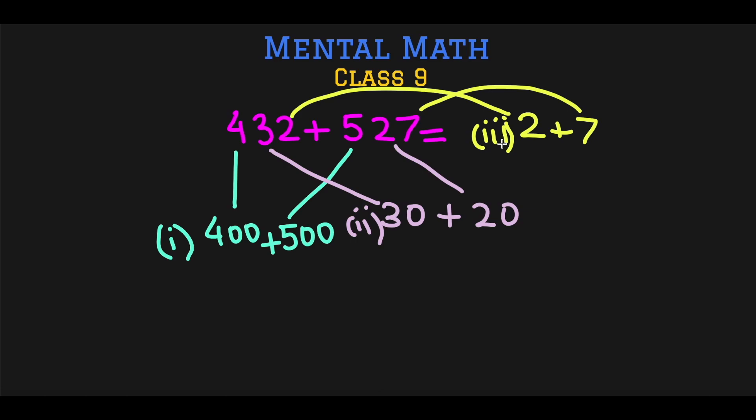And believe you me, this is way easier than doing our traditional 432, 527, and then doing like this. This is a traditional way. You will arrive at the answer faster and in your brain if you do it this way. And what is the answer using the mental method? 400 plus 500 is 900, 30 plus 20 is 50, and 2 plus 7 is 9. And add these three answers—that is 900, 50, and 9—to get 959.